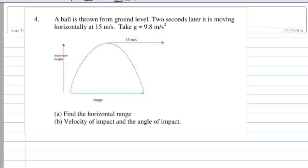This is a problem on projectile motion. A ball is thrown from ground level. Two seconds later, it is moving horizontally at 15 meters per second. Take g equal to 9.8 meters per second squared. Find the horizontal range and velocity of impact and the angle of impact.